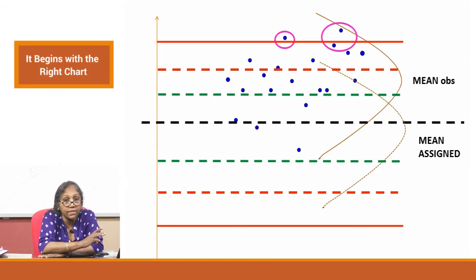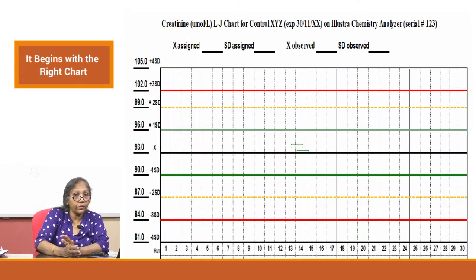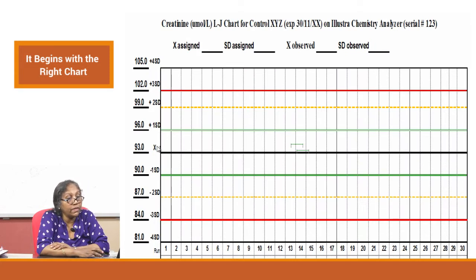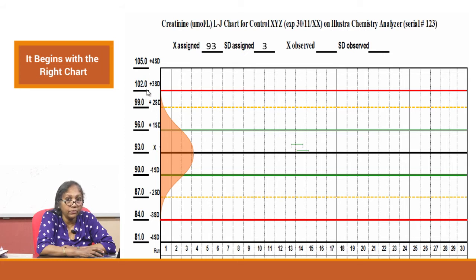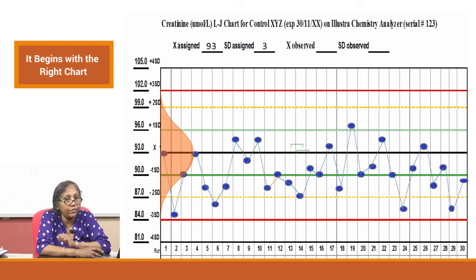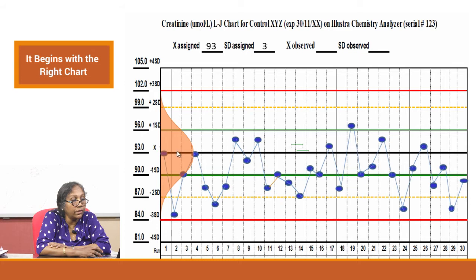Your system is not at fault — what is at fault is that you assigned the wrong values on the chart. For example: an analyte with mean assigned at 93 and standard deviation assigned as 3. You run your QCs with this mean and SD, but over time you find all clustering is happening lower. Your observed mean is actually 90, not 93.